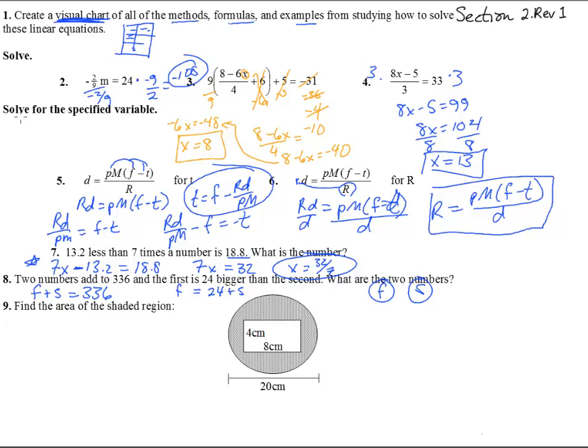So we're going to do a little substitution here. Take this 24 plus s, this is what f equals, and we stick it right over there in that f. Just like that. And so we get 24 plus s plus s equals 336. So we just rewrote this f plus s equals 336. And there's our f plus s equals 336. 24 plus 2s equals 336.